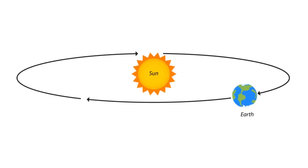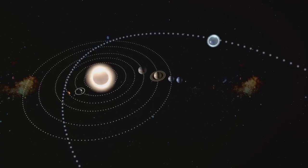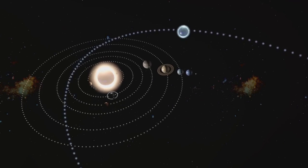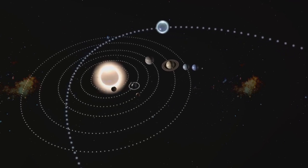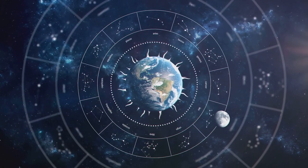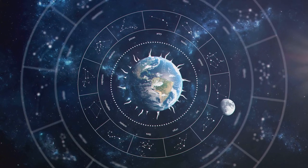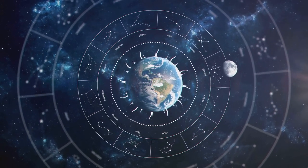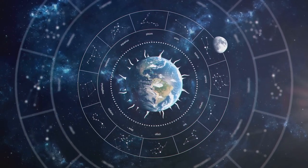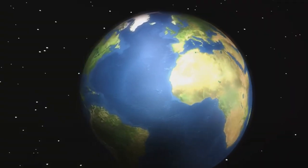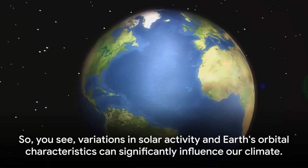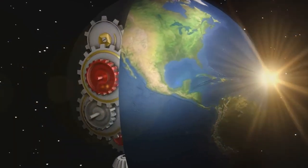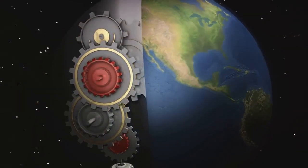Then we have the Milankovic Cycles, named after Serbian physicist Milutin Milankovic. These are natural cycles in Earth's orbit that influence climate shifts. They involve changes in eccentricity, axial tilt, and axial precession, which affect the amount and distribution of sunlight reaching the Earth. Variations in solar activity and Earth's orbital characteristics can significantly influence our climate.